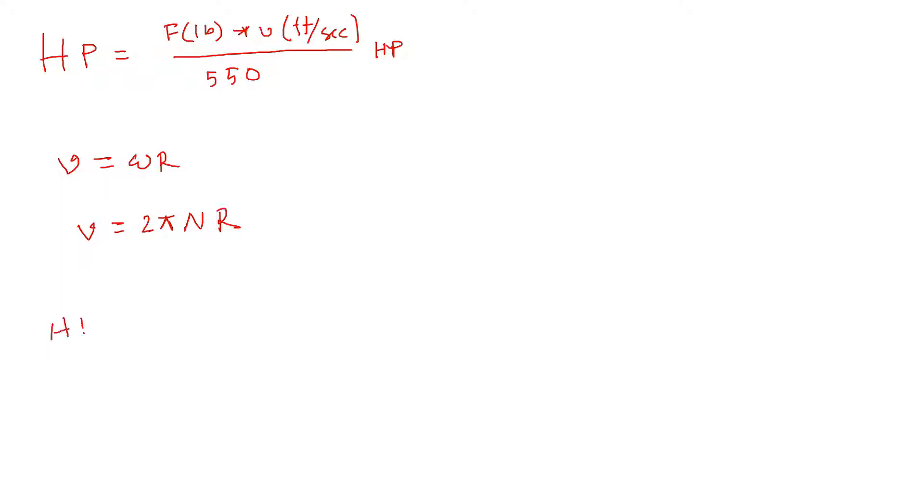Now if we convert this horsepower, plug this into this equation, we can find F times 2πnr divided by 550, something like that. This radius will be in feet and then n will be revolution per second. So basically pound in feet, and then if we cancel this 2π we get something like this.